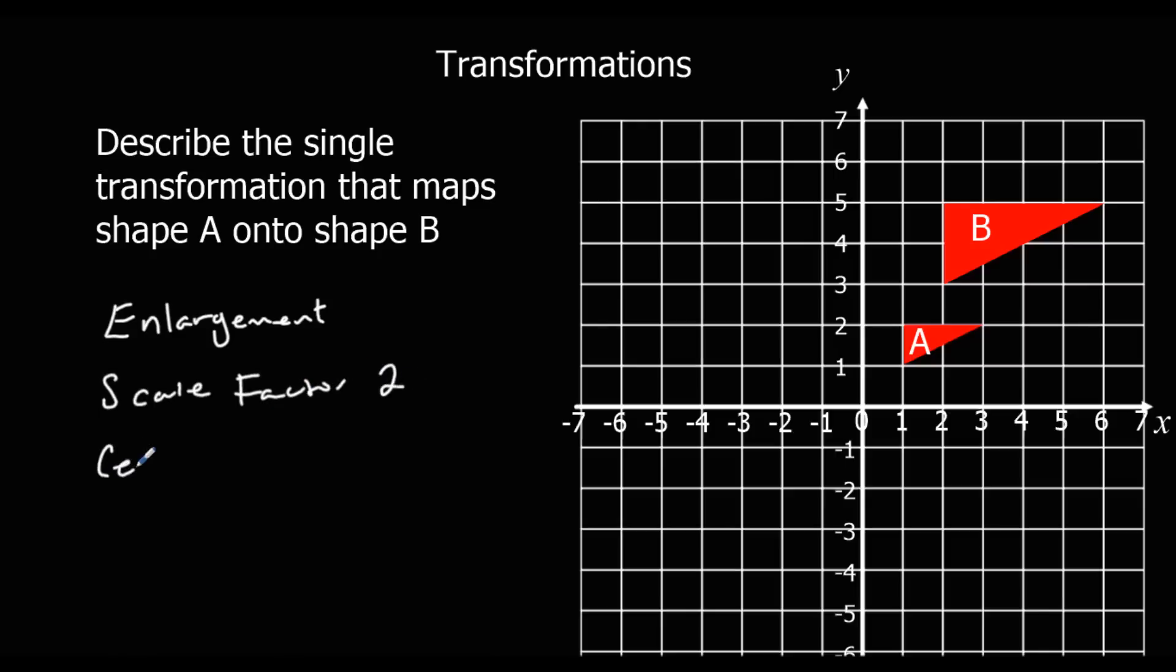And the centre of enlargement. So that point goes with that point. That one with that one. And that one with that one. So the centre of enlargement is (0, -1). And there are three bits of information we need. So we're finished.